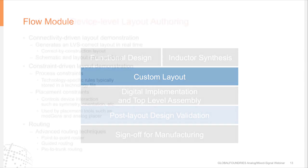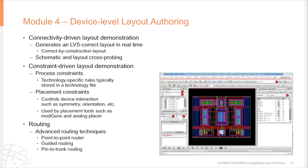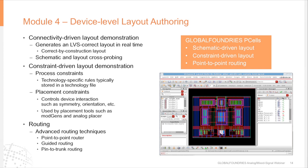Next is the custom layout module. Here we introduce Global Foundry's P-cells and demonstrate how to use them in the custom layout environment. We start by generating connectivity-driven layout, demonstrating schematic and layout cross-probing. We also demonstrate constraint-driven layout, considering both process constraints from the foundry and placement constraints chosen by the analog designer. One new constraint at 28 nanometer is dummy transistors, inserted to manage stress. The flow also demonstrates using P-cells for point-to-point routing and guided routing.